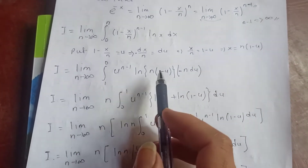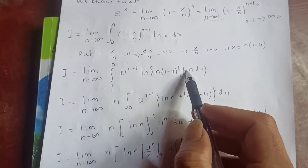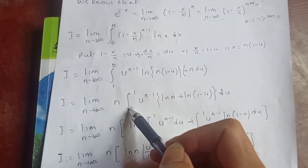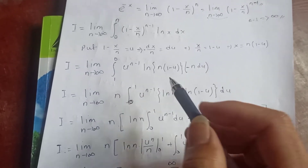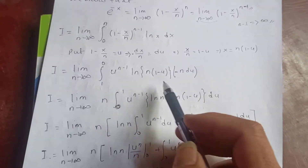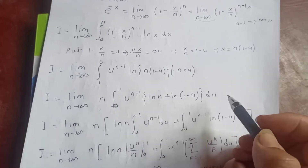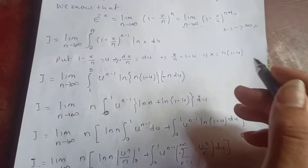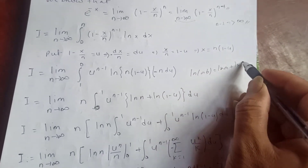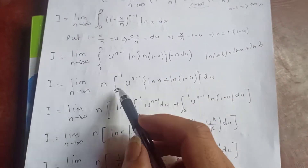The negative sign flips the limits from 1 to 0 into 0 to 1, and the factor of n comes out. Using the log property log(ab) = log(a) + log(b), we split log(n(1-u)) into log(n) + log(1-u). So I = lim_{n→∞} n · ∫₀¹ u^(n-1) [log(n) + log(1-u)] du.